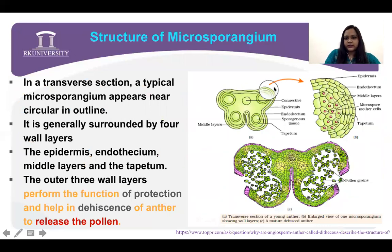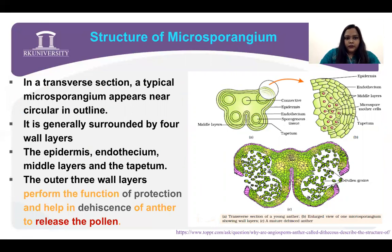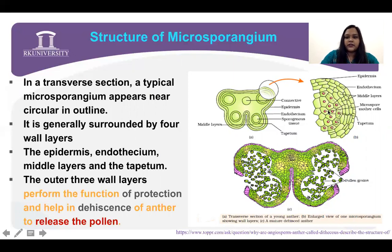In transverse section, this is a diagrammatic representation of the anther. The anther is blocked but having the pore chamber. In that pore chamber, there are four microsporangia having the microspores. These are generally surrounded by four walls: the outermost is the epidermis, then the endothecium, the middle layer, and the tapetum.